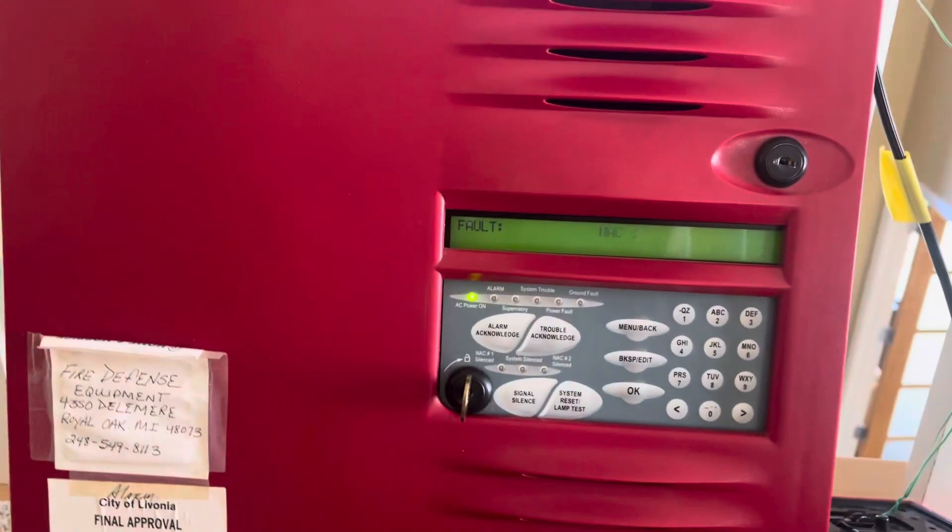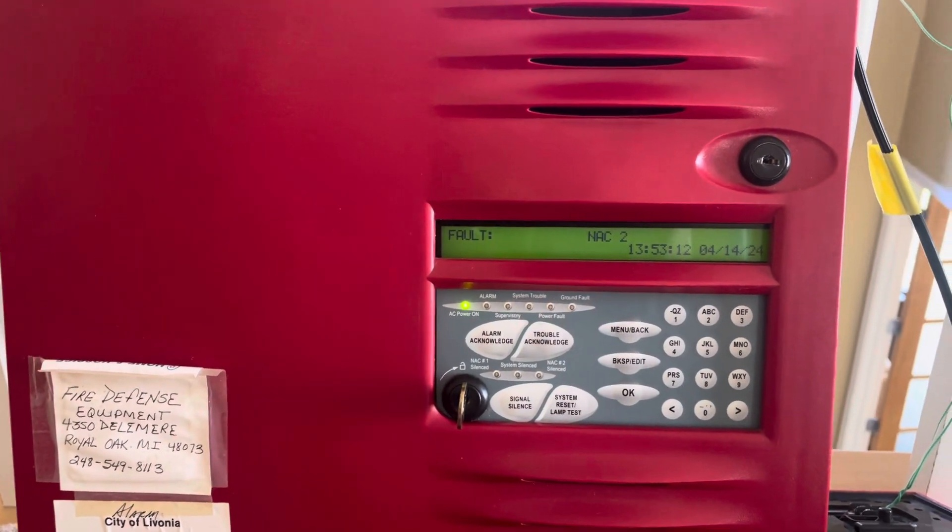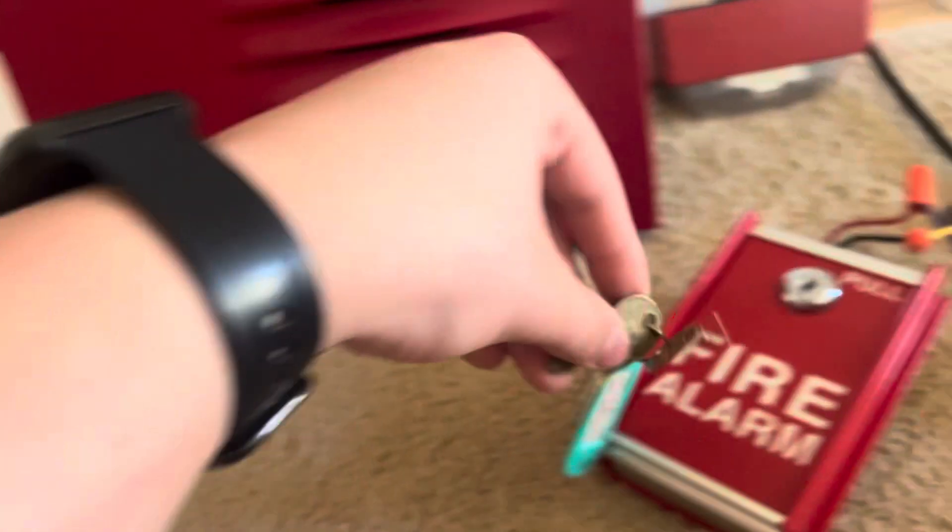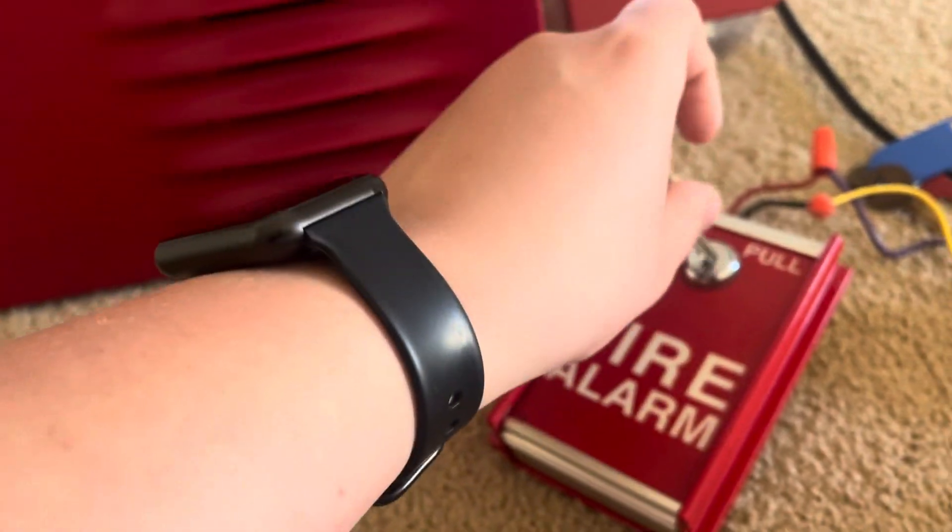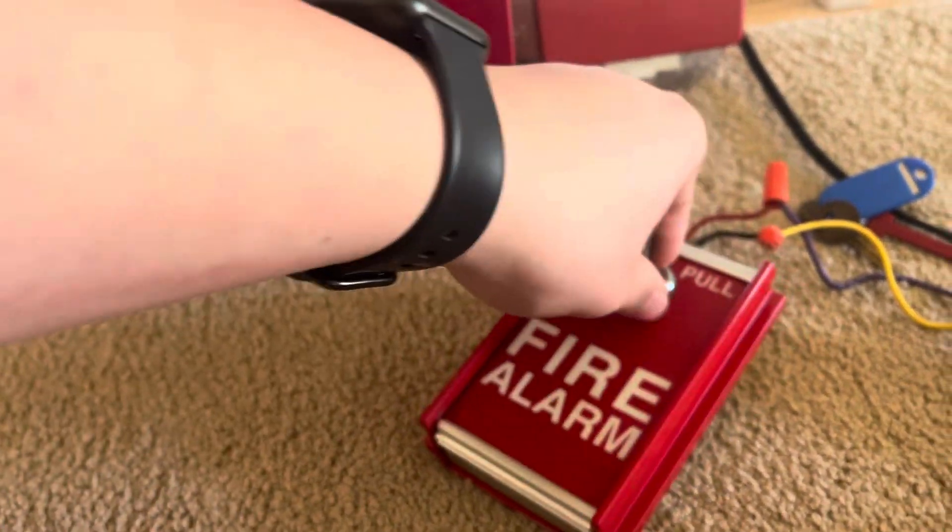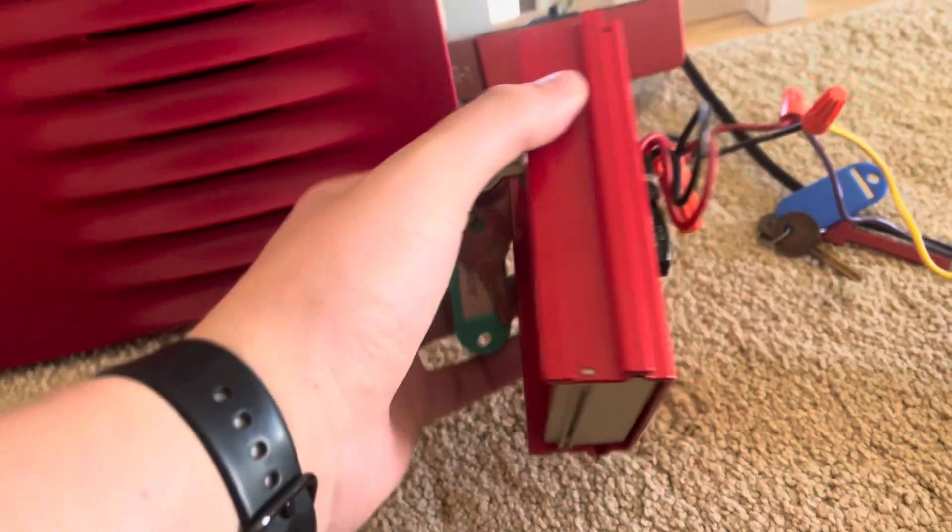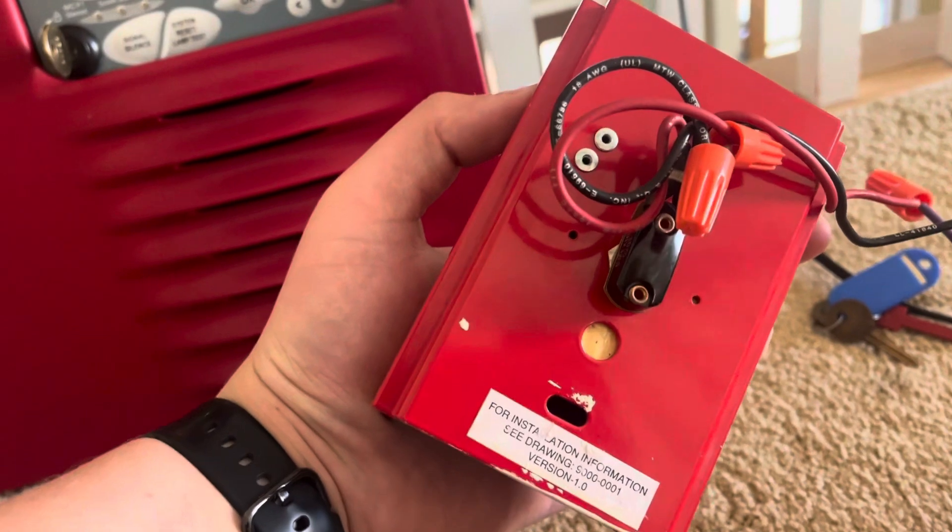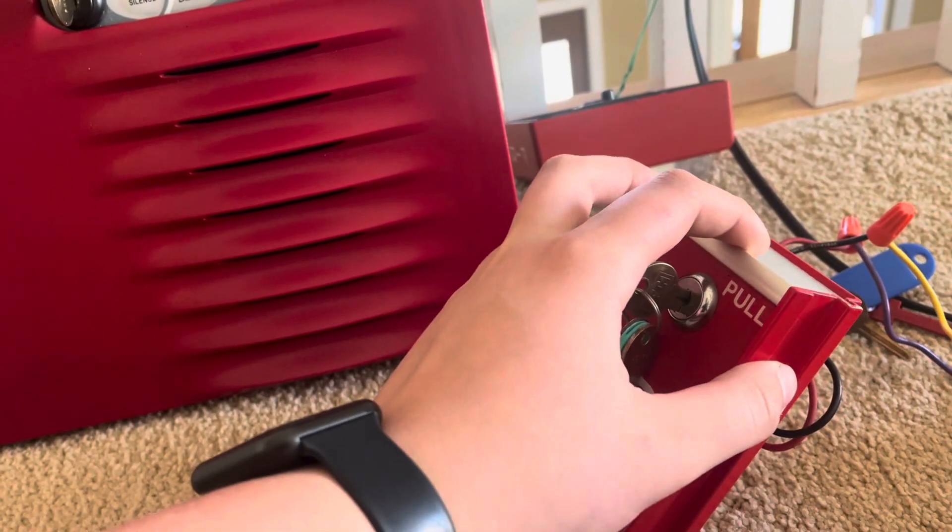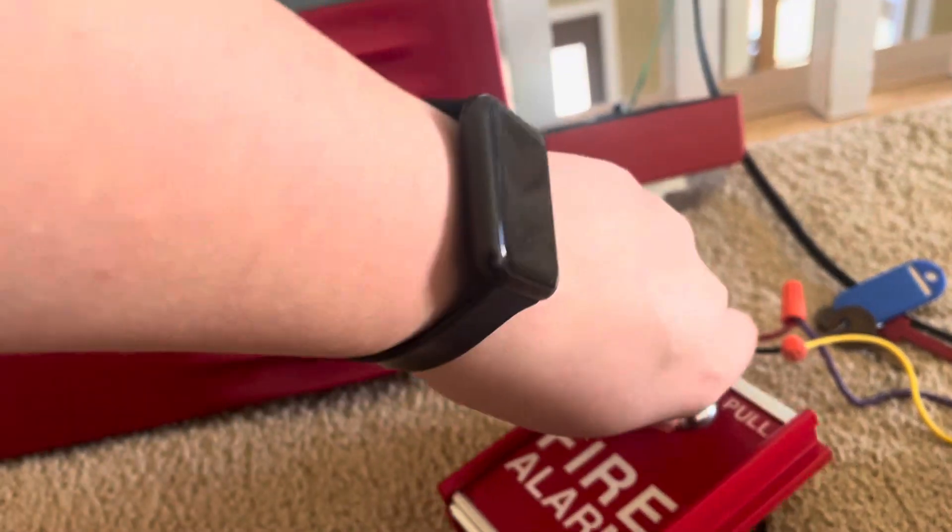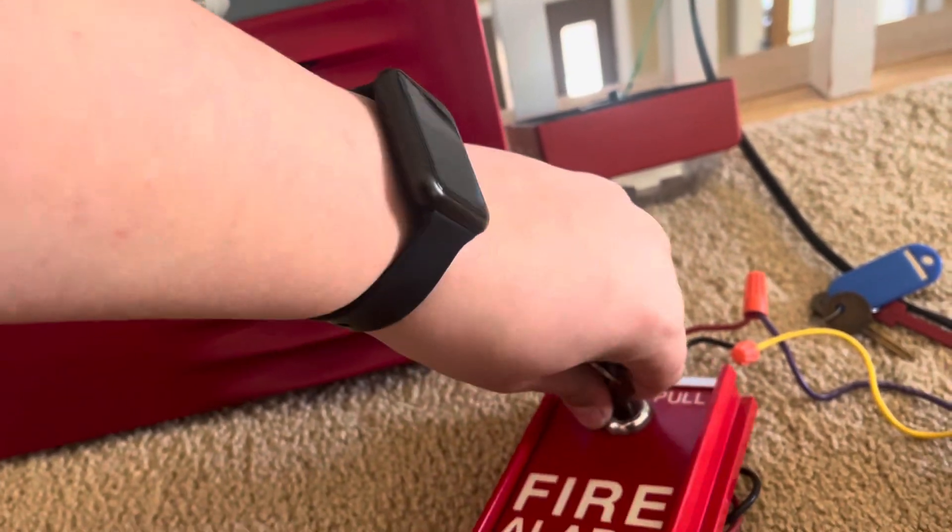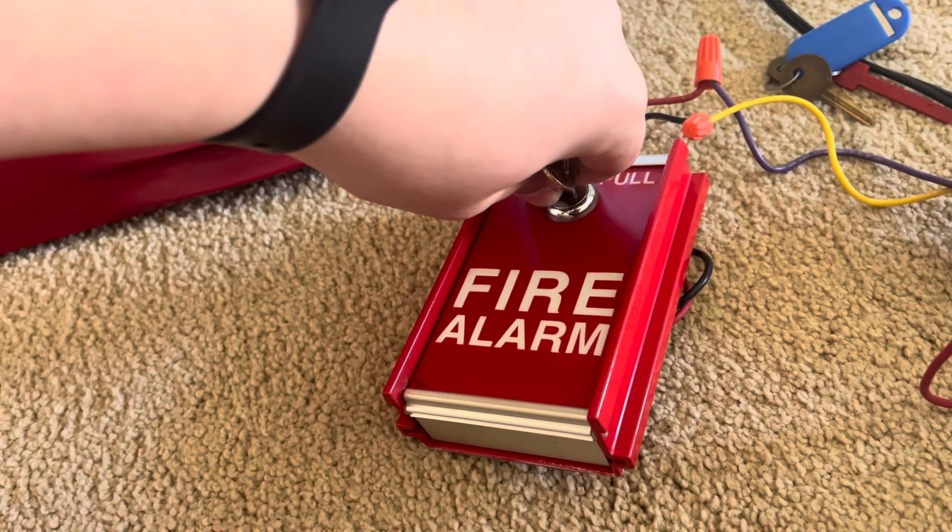So yeah, let's activate it. These pull - FCI MS-6s are really hard to activate without being mounted on anything, so I'm just gonna key operate it. Three, two, one.